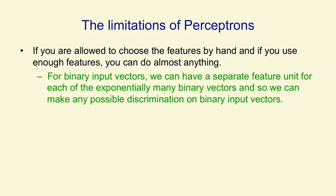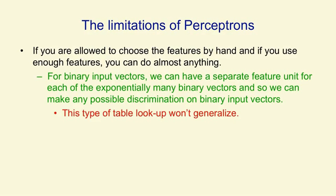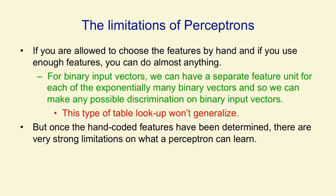But of course, that's not a very good strategy for solving a practical problem, because you need an awful lot of feature units and it won't generalise. You can't look at a subset of all possible cases and have any hope of getting the remaining cases right, because those remaining cases require new feature units and you don't know what weights to put on them. Once you've decided the hand-coded features, there are very strong limitations on what a perceptron can learn to do.